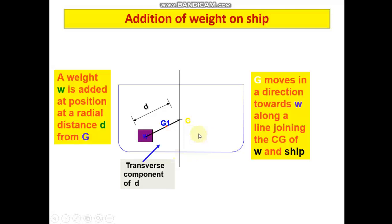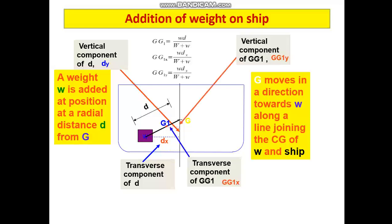It will have a transverse component dx and a vertical component dy. We can find out GG1y and GG1x, which will be the shift in center of gravity in the transverse as well as vertical direction. All these values we can find out using the formulae which we have studied earlier. This is how we can find out how the center of gravity has shifted when we are adding a mass in a vessel.